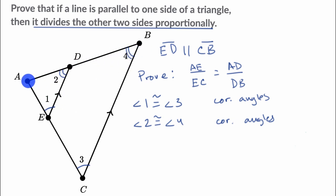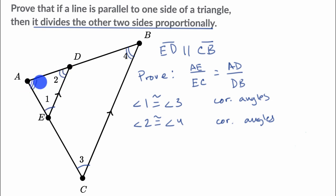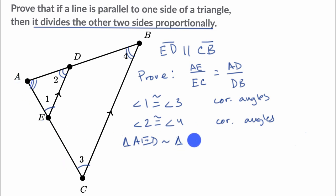If you look at triangle AED and triangle ACB, you see that they have two sets of corresponding angles that are congruent. If you have two sets of corresponding angles, all of the angles are congruent. You actually have a third because angle BAC is common to both triangles. So we can say that triangle AED is similar to triangle ACB by angle-angle similarity.